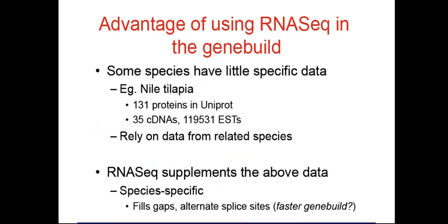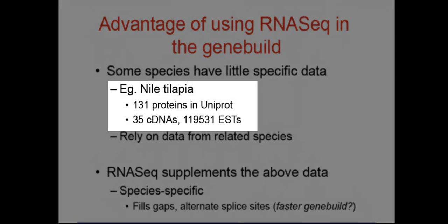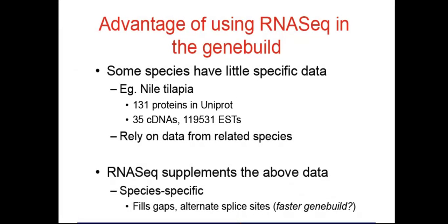It's a great advantage to be able to use RNA-Seq data in the gene build, especially when the species we're working with has very little protein or cDNA data in the public databases. Take Nile tilapia for example, which only had at the time of building 131 proteins in Uniprot and 35 CDNAs in the ENA. In the past, to annotate a species like tilapia, we would have to rely on using proteins and CDNAs from other species.